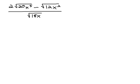In this video, we're going to look at rationalizing the denominator of 2 root 20x to the fifth minus the square root of 12x squared, all over the square root of 18x.